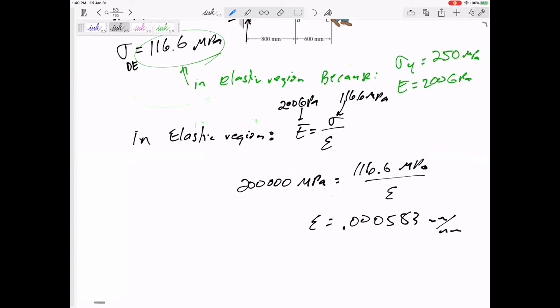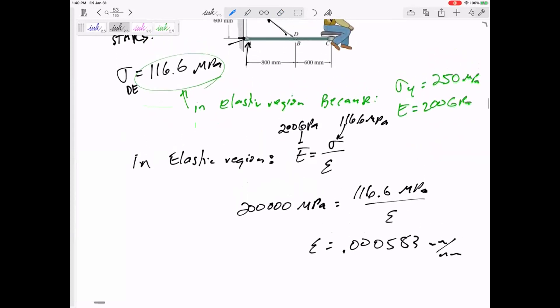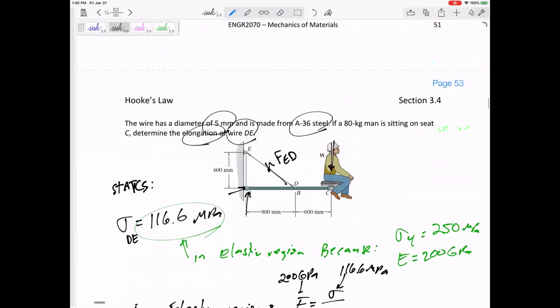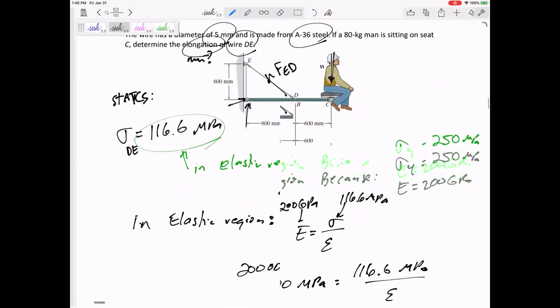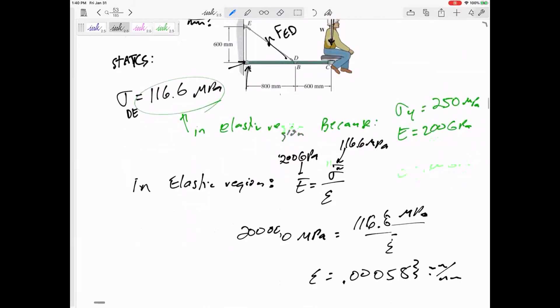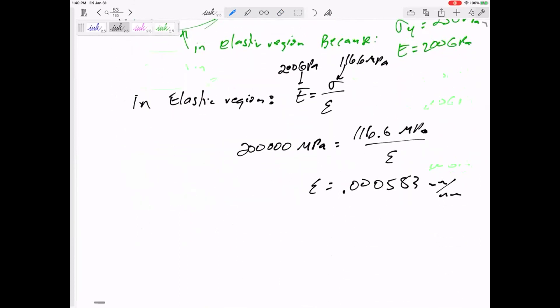The strain would be 0.000583 millimeters per millimeter. And sorry, I'm going fast, and I didn't read the problem statement. The problem statement is not asking for the strain. The problem statement is asking for the elongation. How many millimeters does it stretch? So I know that this is delta L over L. And so I'd need to multiply that times L in order to get the delta L.